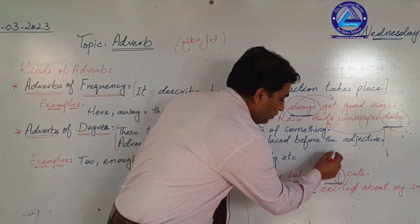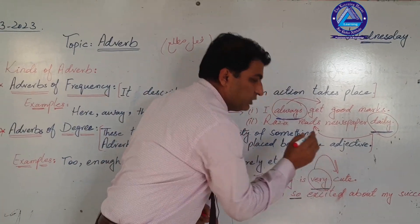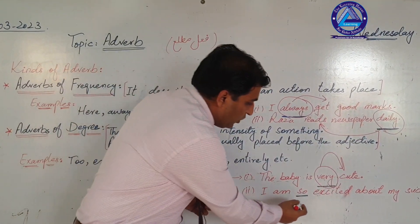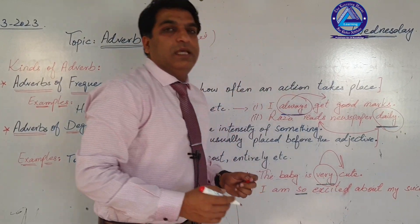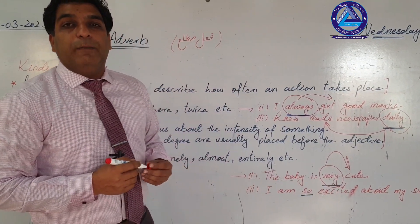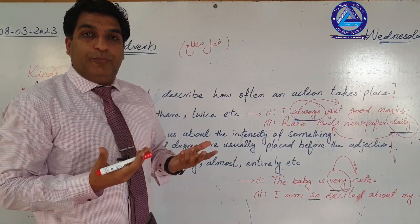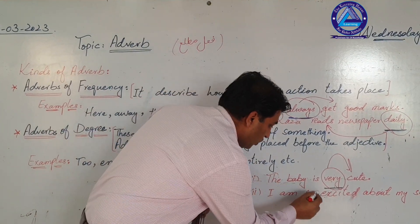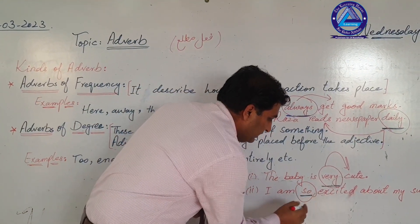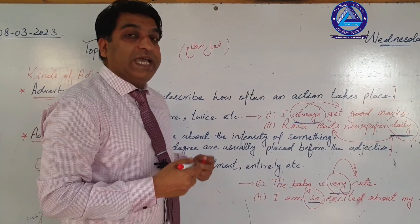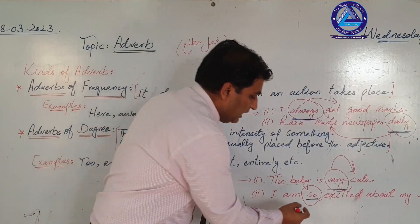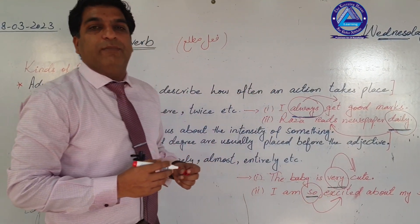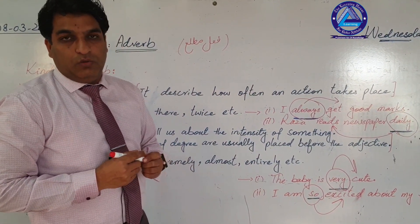Another example: 'I am so excited about my success.' In this sentence, 'so' is the word that is enhancing the meaning of excitement. So 'so' is an adverb of degree here.